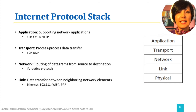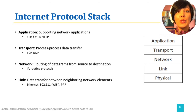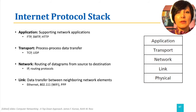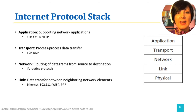The Link layer provides services to support transfer of data between two neighboring nodes, like an end system and a router, or two routers. Ethernet, 802.11 or Wi-Fi, and Point-to-Point Protocol (PPP) are examples of Link layer protocols.